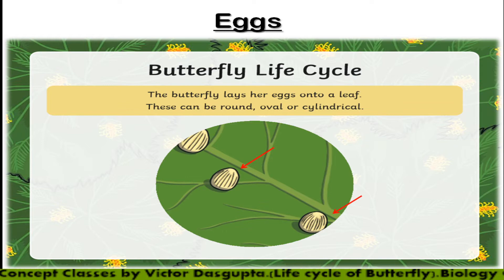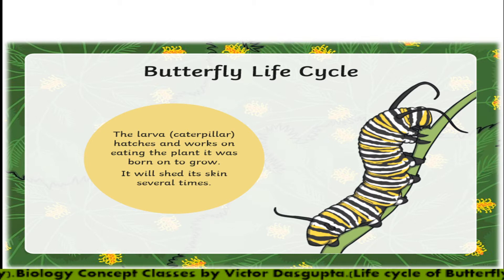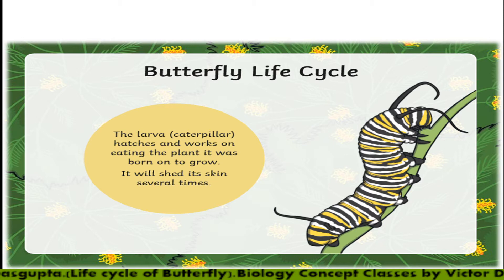Here you can see the structures of the eggs. The next stage of its life cycle is the caterpillar, or the larva. The egg hatches into this caterpillar, and its major motive is to eat the plant — the plant where the adult laid the eggs.